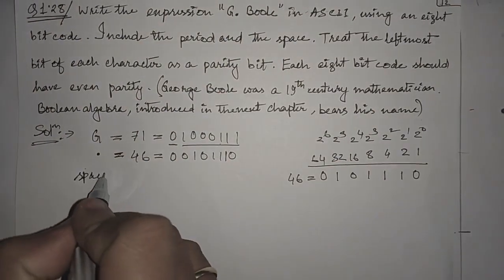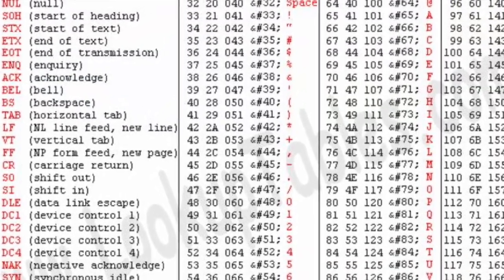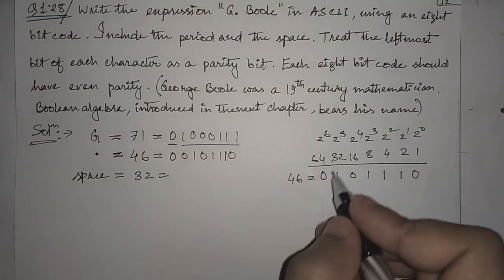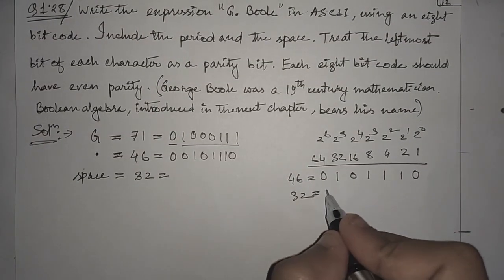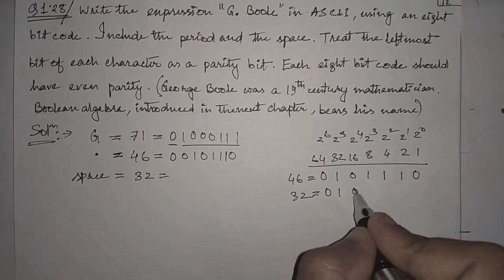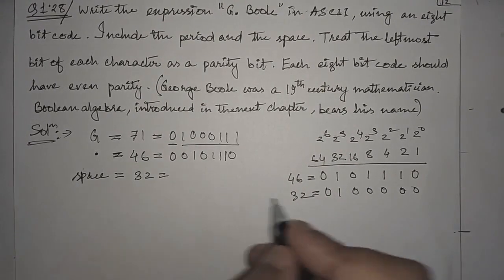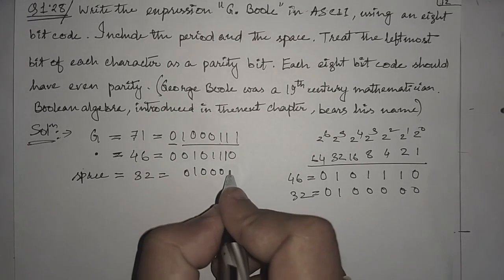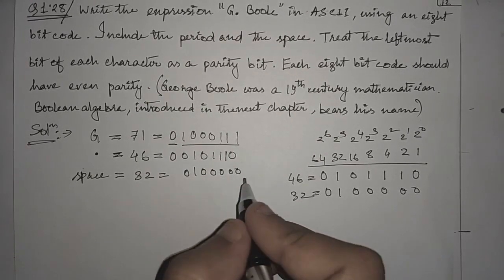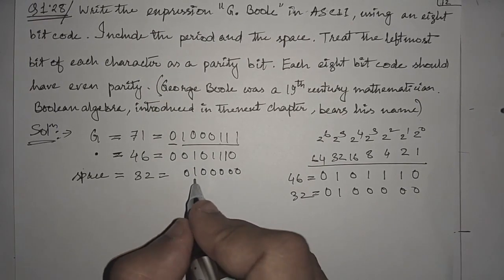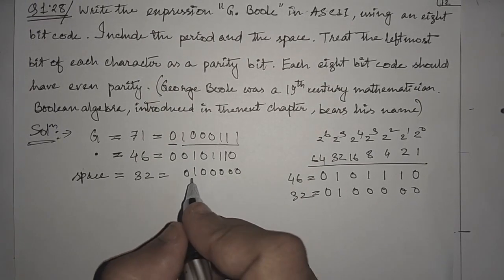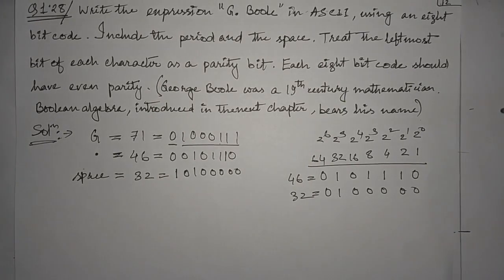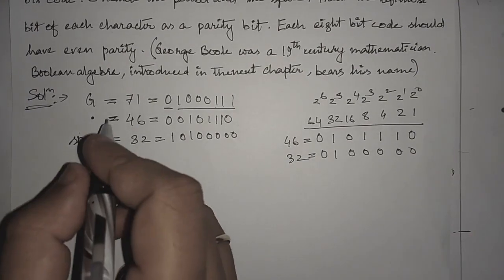Then we have space. The decimal equivalent of space is 32. We can directly make 32 as 1 followed by all zeros: 0100000. Then we can write the bits: 0, 1, 0, 0, 0, 0, 0. Here we can see that we have only one number of ones, that is odd, so the even parity bit will be 1.